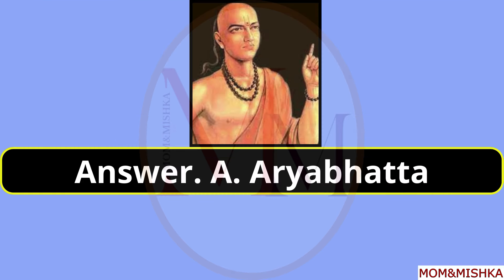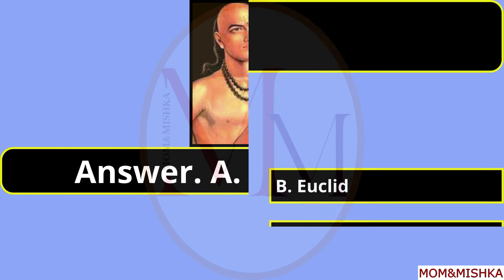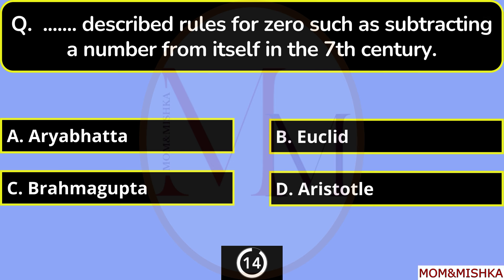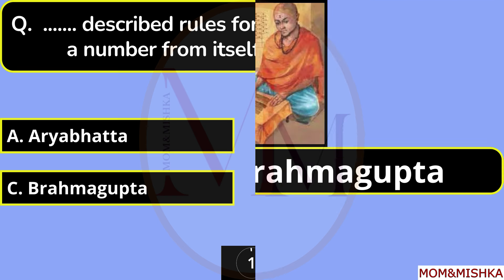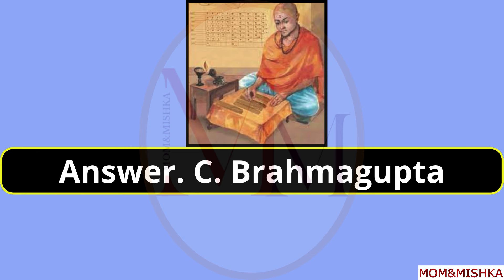Who introduced zero in the decimal number system? Option A — Aryabhata. Who described rules for zero, such as subtracting a number from itself, in the 7th century? Brahmagupta, option C.